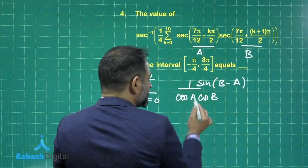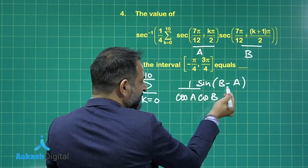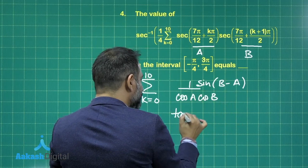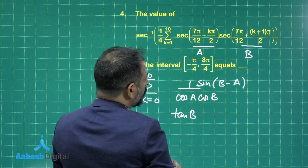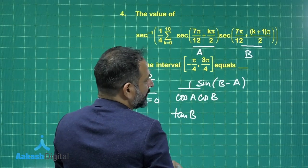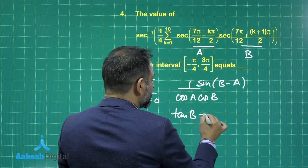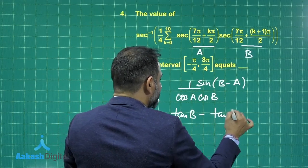If I expand this, we have sin b cos a. So this will give you tan b and this will be minus cos b sin a. So this will be again tan a.